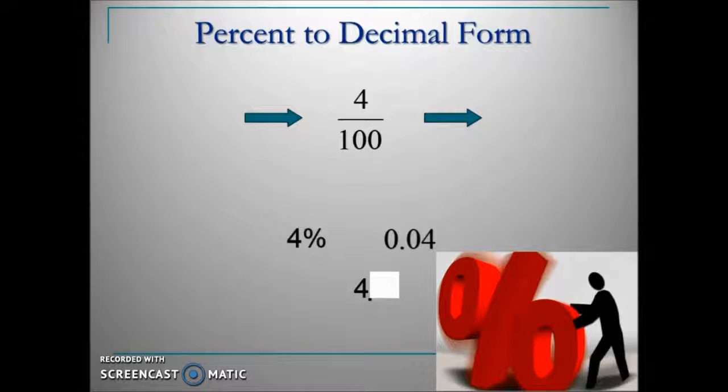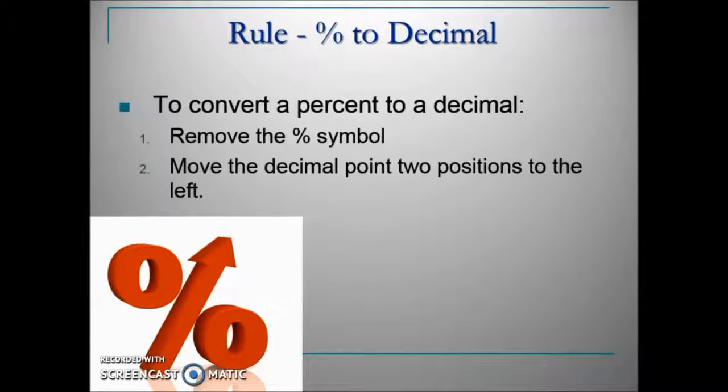The implied decimal point moved two places to the right to give us that equivalent decimal value. So to capsulize this or summarize what just happened, the rule to change a percent to a decimal.